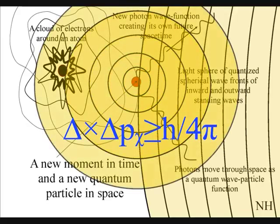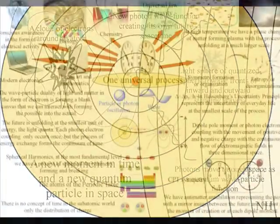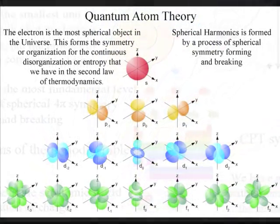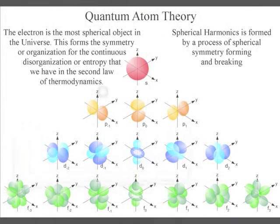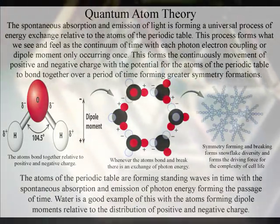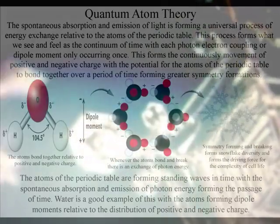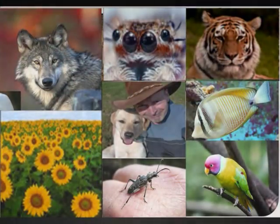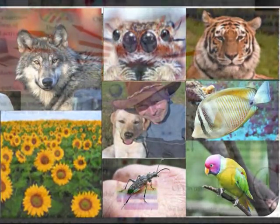At the most fundamental level this is a process of spherical symmetry forming and breaking. This is represented by spherical harmonics on the diagram. Only a process of symmetry forming and breaking would form entropy or disorganization with a built-in potential for ever greater symmetry formation that we see in the great diversity and complexity of life.